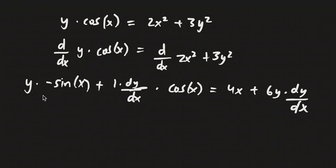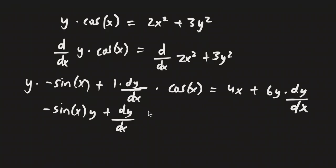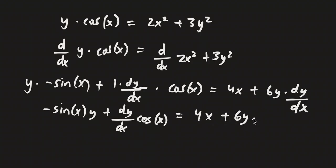Now we've got to simplify this. This is going to become negative sine x times y plus dy/dx times cosine x — we forgot the cosine x — equals 4x plus 6y times dy/dx.